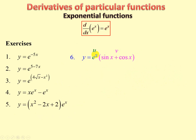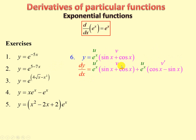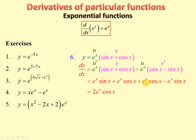Final exercise: u equals e to the x, and v equals sin of x plus cos x. We use the product rule again. u prime is e to the x. Applying u prime v plus u v prime, with v prime being the derivative of sin x which is cos x, and derivative of cos x which is minus sin x. Multiplying out, terms cancel one another out, and we end up with 2 e to the x cos x.